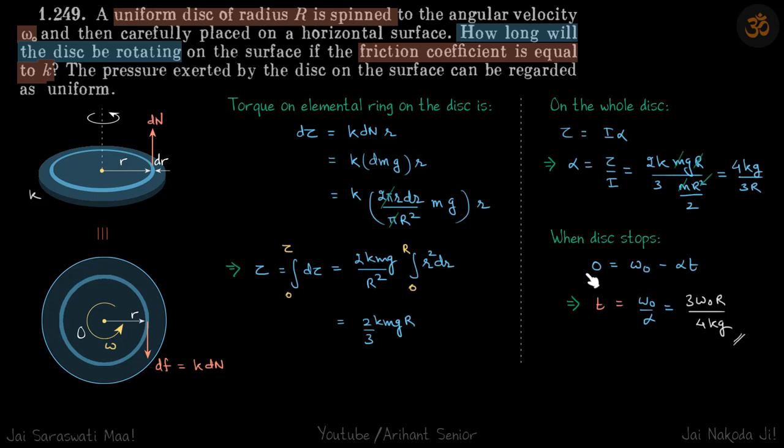We need to find time. Final angular velocity 0 equals initial angular velocity minus alpha T, which will give T to be this.